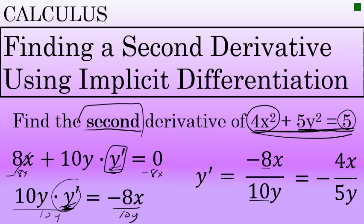Now, to find the second derivative, we will take the derivative of negative 4x over 5y. So we have our first derivative, negative 4x over 5y. This is a quotient.